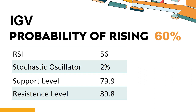The current stochastic oscillator of IGV is 2%. When the indicator falls below the 20 level, it is usually considered oversold, indicating that a price rebound or recovery is likely for the stock. An oversold condition occurs when the stock price falls too fast and too much in a short period of time, which may indicate that the selling pressure has been exhausted.